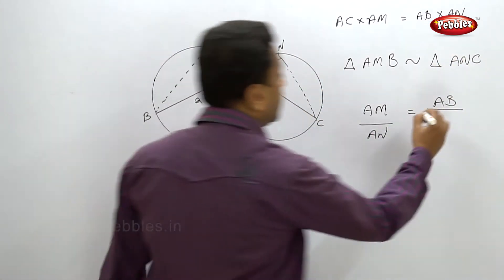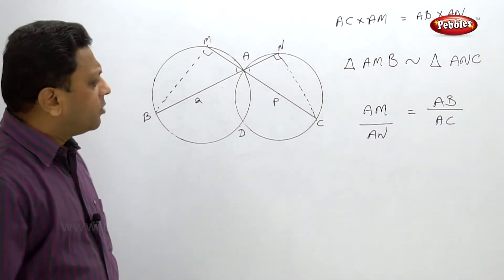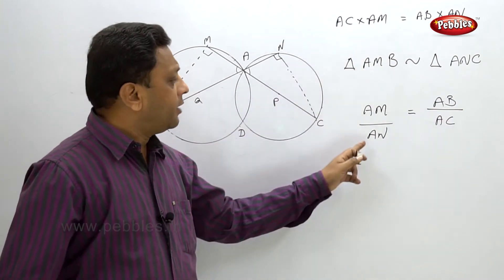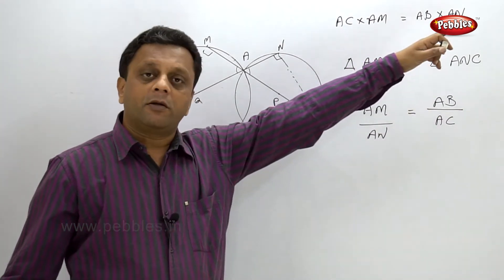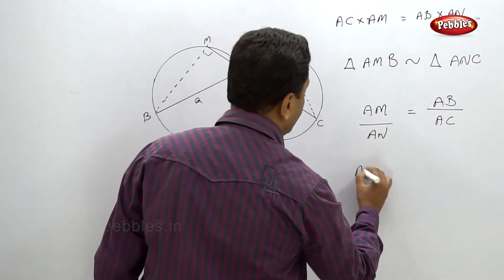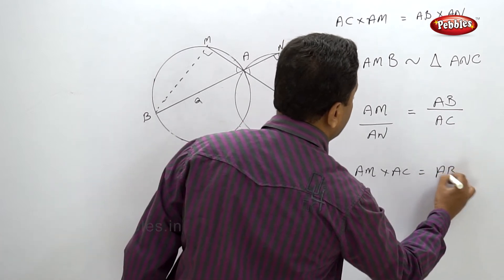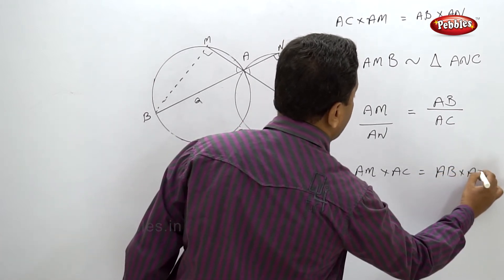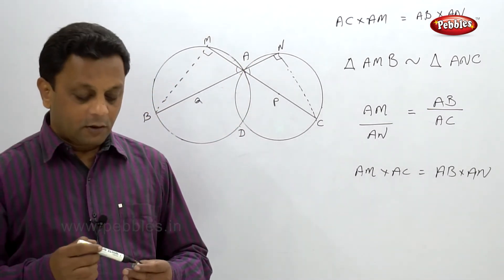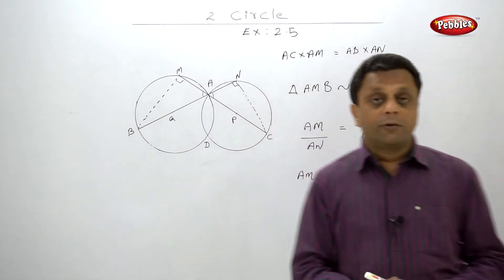From the ratio AM/AN = AB/AC, just cross multiply: AM into AC equals AB into AN. Proved. Very simple.